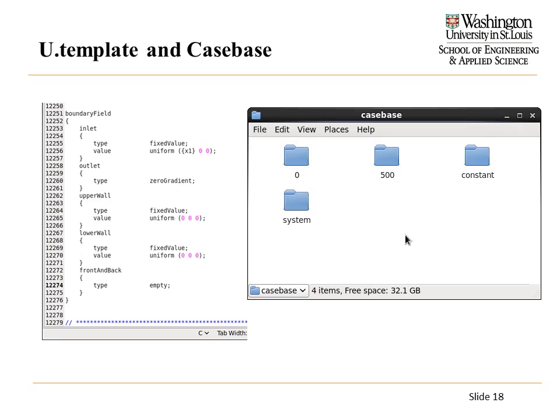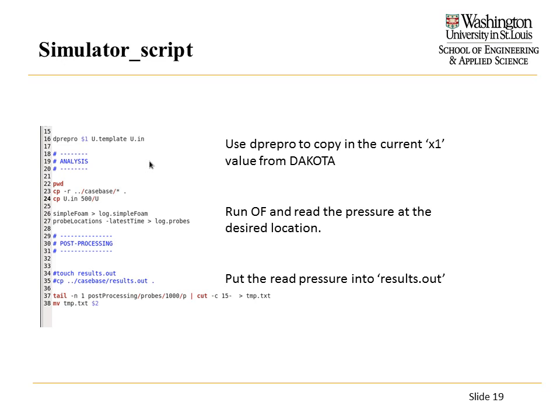Since I'm modifying velocity, the template I'm using is a velocity template, and here is where my X1 variable appears. dprepro replaces this with the necessary velocity for each individual in each generation. The script replaces X1, then runs SimpleFOAM, probes the pressure at the specified location to get that value, and copies it into the results-out file.